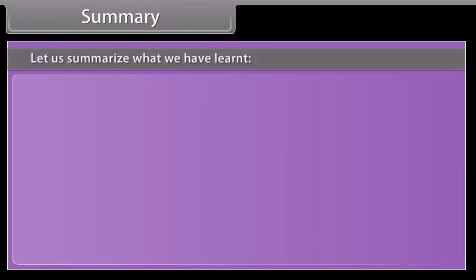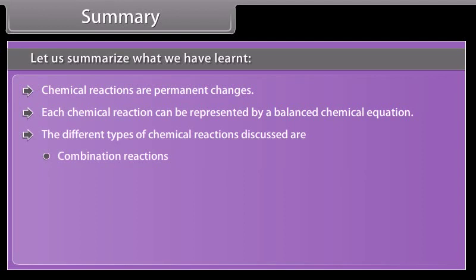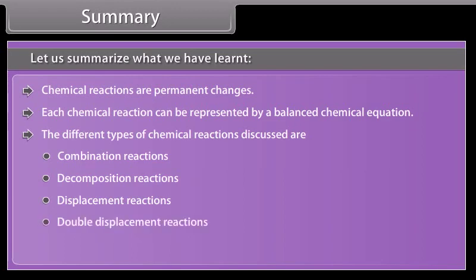Let us summarize what we have learned. Chemical reactions are permanent changes. Each chemical reaction can be represented by a balanced chemical equation. The different types of chemical reactions discussed are combination reactions, decomposition reactions, displacement reactions, double displacement reactions, and redox reactions.